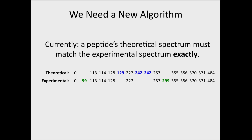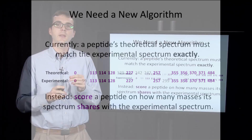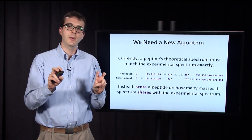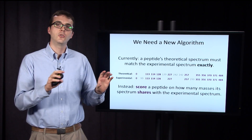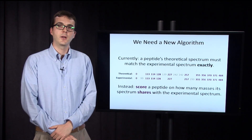So the question is, what do we do? What we're going to do is, instead of having to match the spectrum exactly, we're going to score a peptide based on how similar it is to the experimental spectrum.